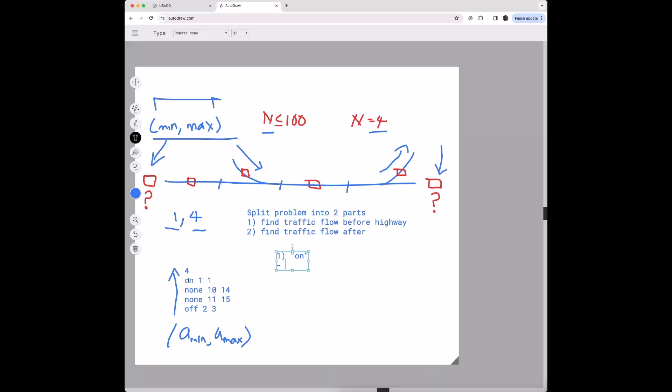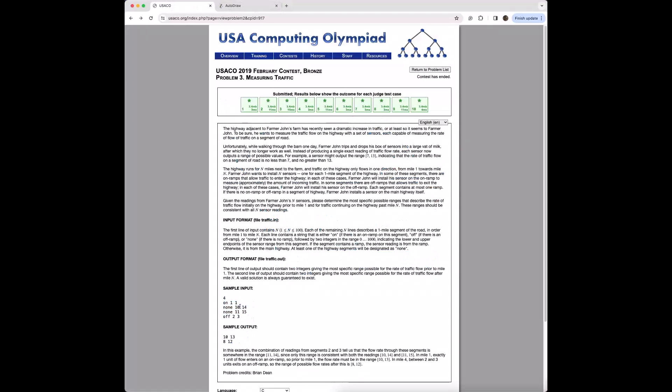So when we encounter an on, what we did last time was we subtracted one from both 10 and 14. I guess we subtract the on values from a_min and a_max.